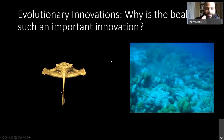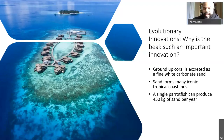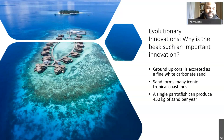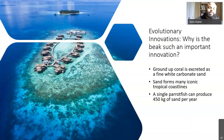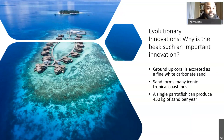Coral is not very nutritious, so parrotfishes have to eat a lot of it. And parrotfish poop is like no other poop — it actually forms a lot of our major tropical coastlines. In tropical islands like Hawaii and the Maldives, a lot of those white sand beaches are mostly parrotfish poop. A single parrotfish can produce 450 kilograms of sand in one year, and parrotfishes have been around for 30 million years. That's a lot of parrotfishes, and that's a lot of sand.